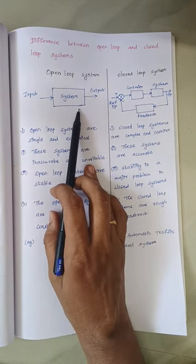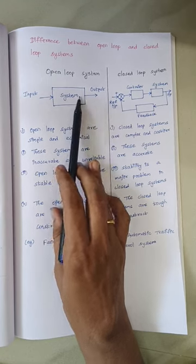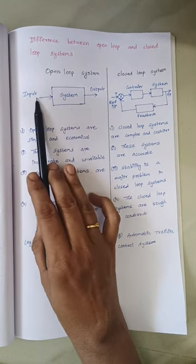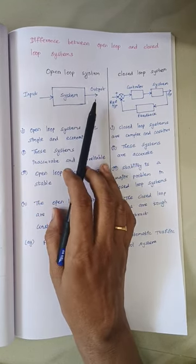This is the typical block diagram of an open loop system. There is a system, and to this system we are giving some input and we are getting some output.